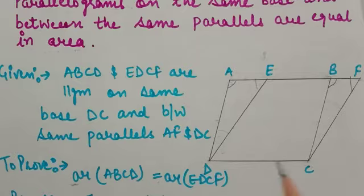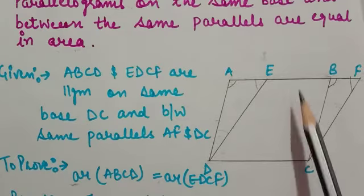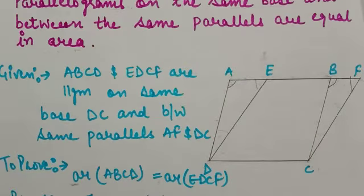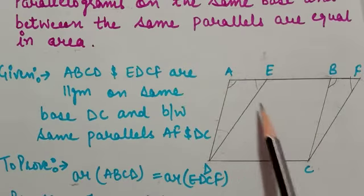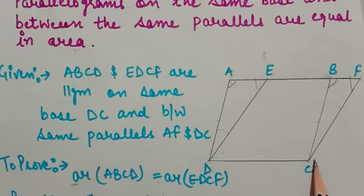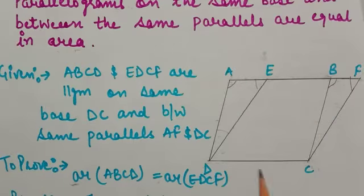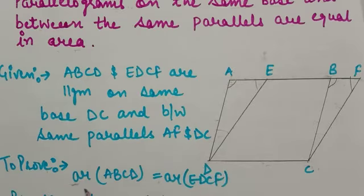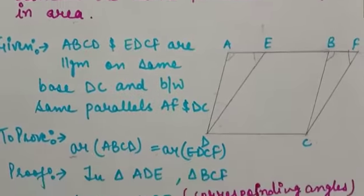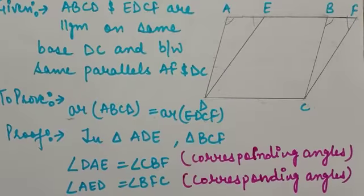We have two different parallelograms on the same base DC, between two parallel sides AF and DC — one of which is the common base. Now, to prove: area of parallelogram ABCD is equal to area of parallelogram EDCF. We start our proof using congruency.